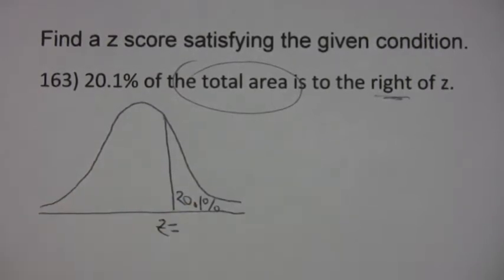Now keep in mind the table gives you area to the left, not area to the right, so you can't really use that 20.1 directly.